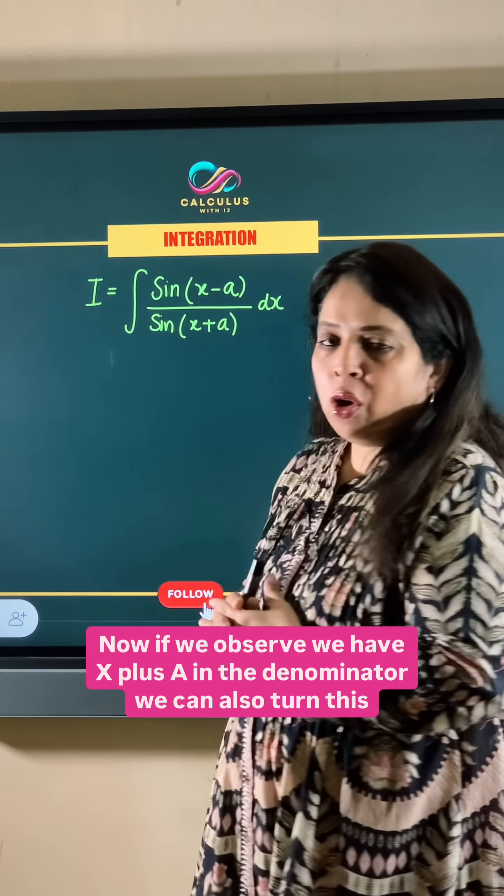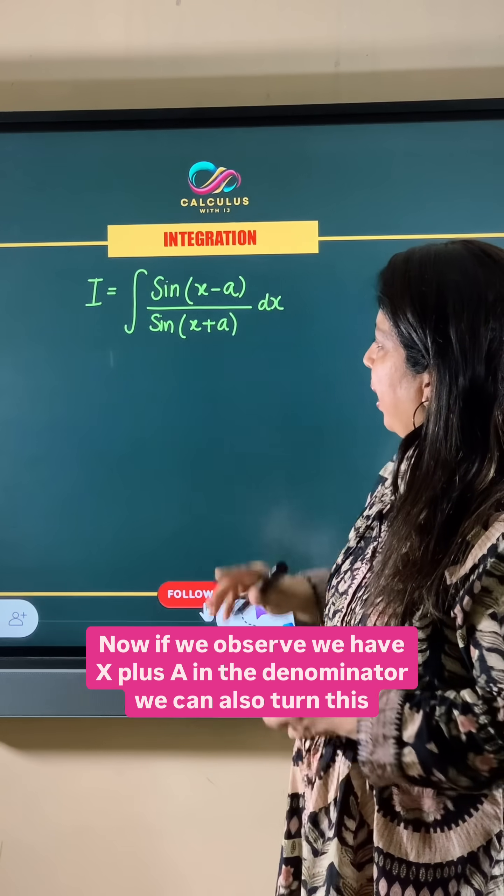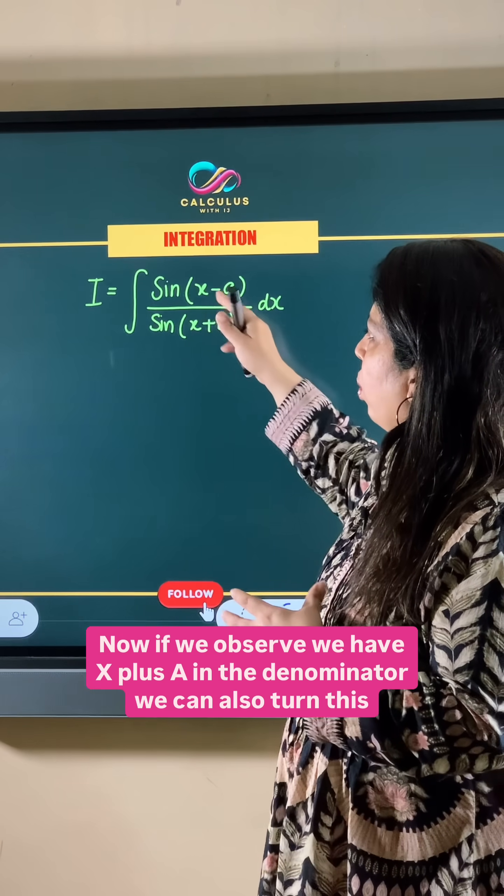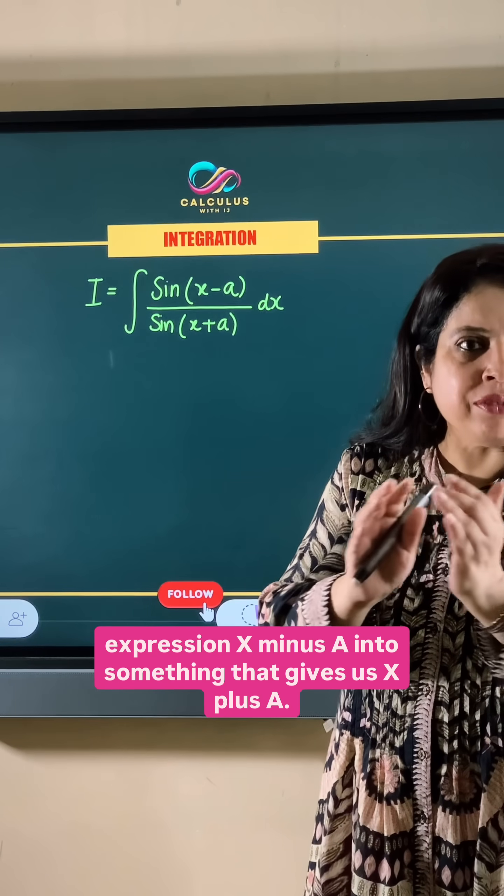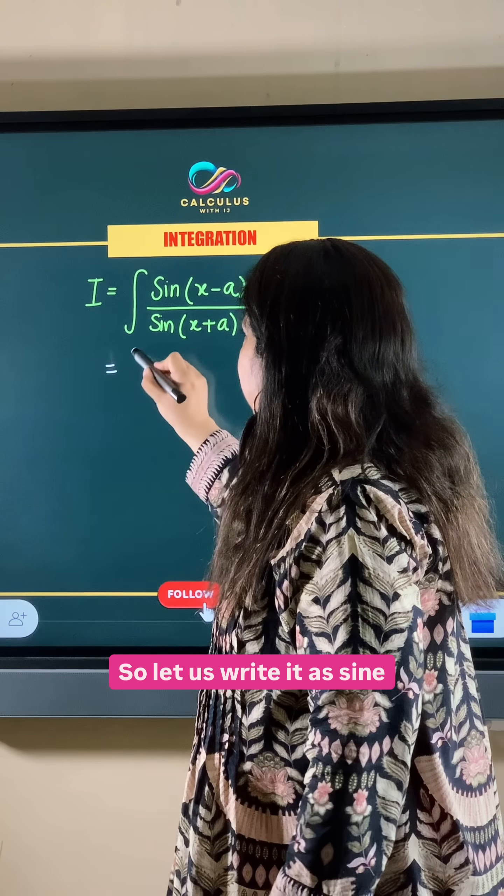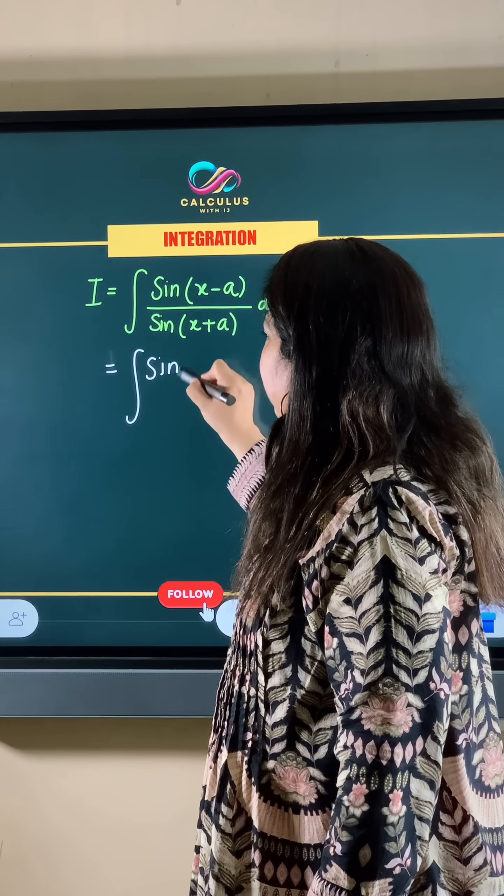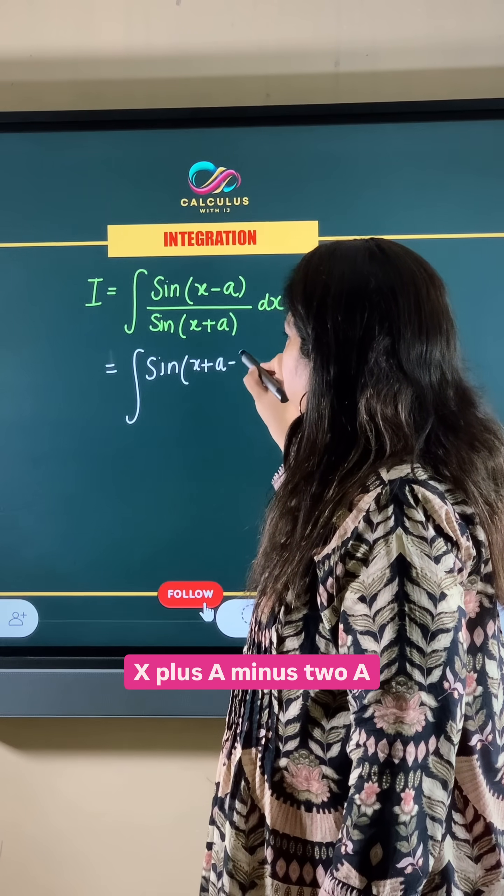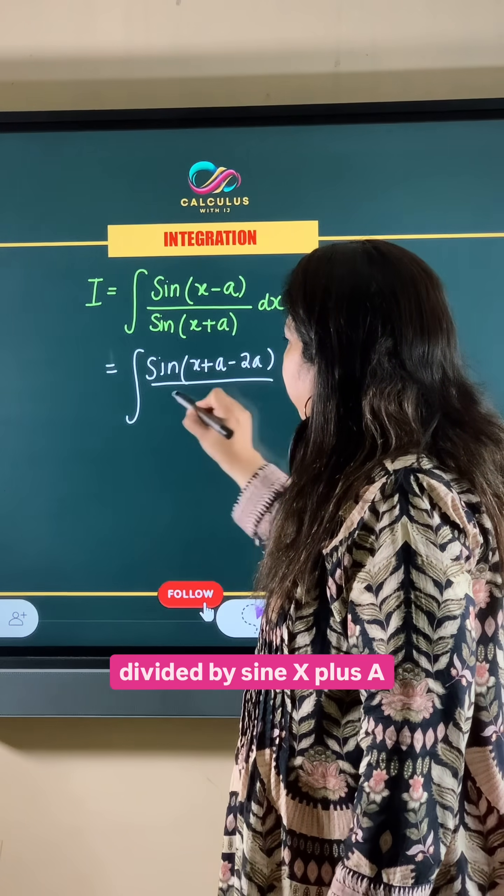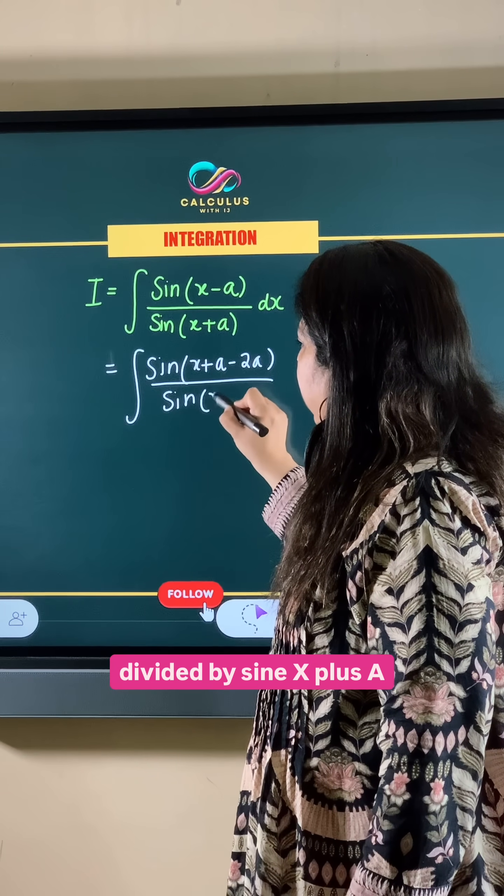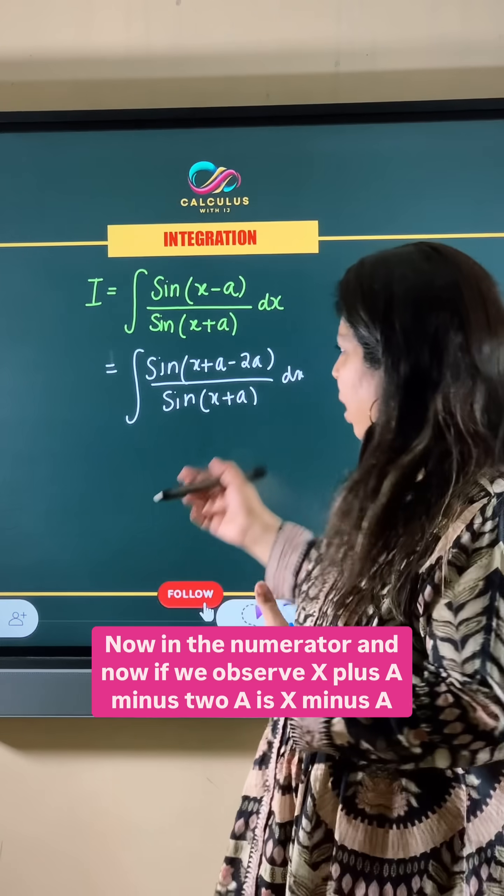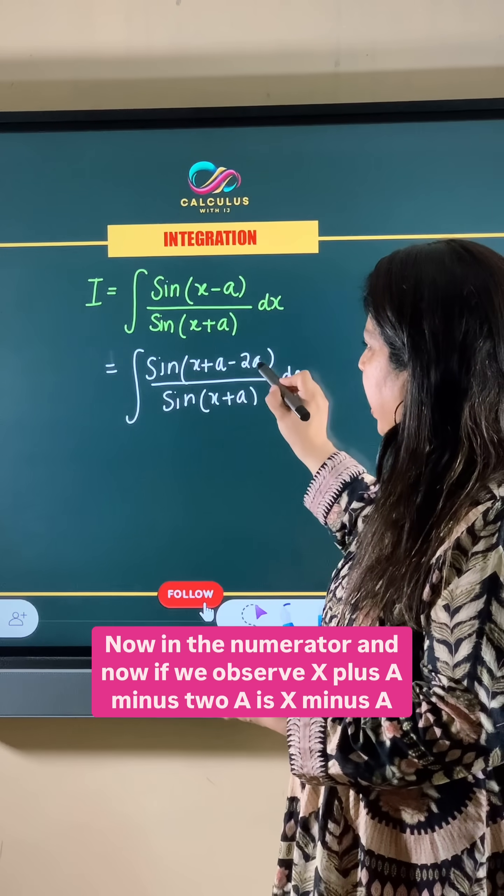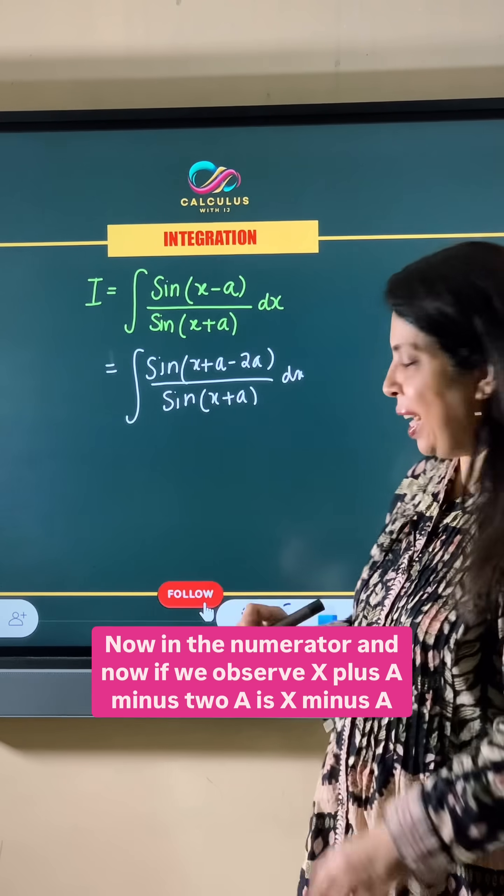Now if we observe we have x plus a in the denominator, we can also turn this expression x minus a into something that gives us x plus a. So let us write it as sine x plus a minus 2a divided by sine x plus a dx. Now if we observe, x plus a minus 2a is x minus a only.